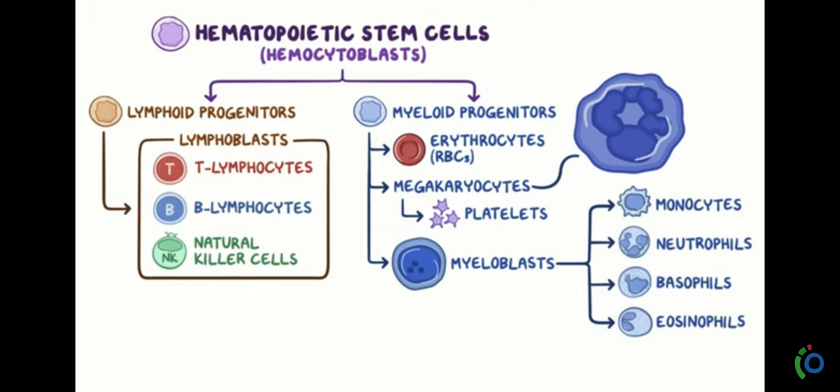Natural killer cells, or NK cells: when some kind of invaders or foreign particles like bacteria or viruses enter the body, they are first recognized by the myeloid progenitor cells. After this, the NK cells attach to and combine with such foreign particles, engulf them, and destroy them.